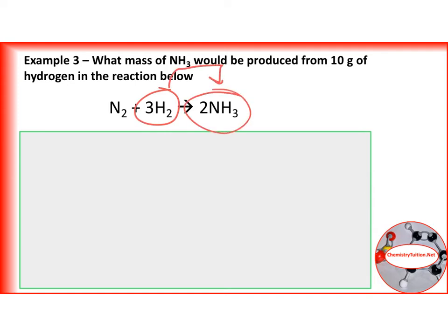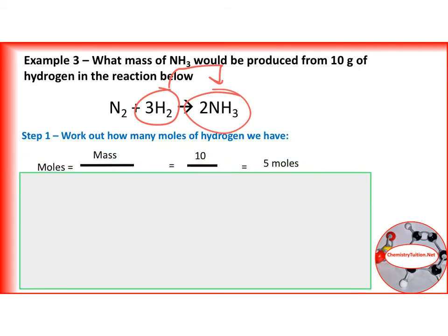So the first thing we need to do is work out the number of moles of hydrogen. If we do that, we will find that the moles is mass over molar mass. Molar mass of hydrogen is, of course, 2. So that means we have got 5 moles of hydrogen.